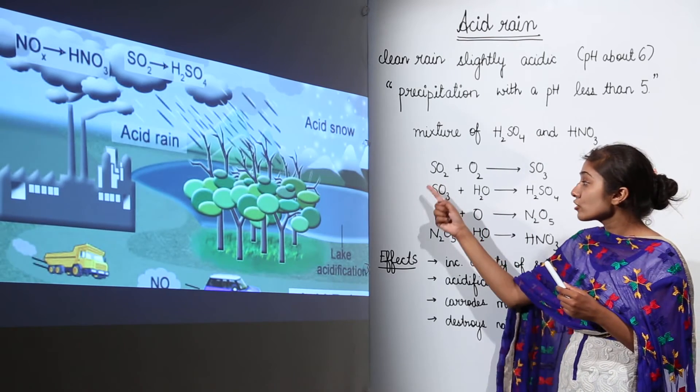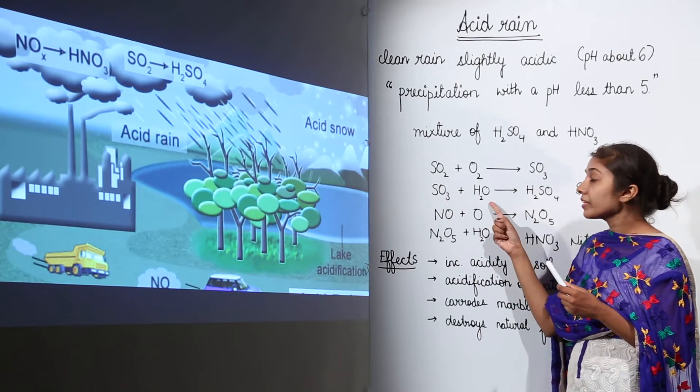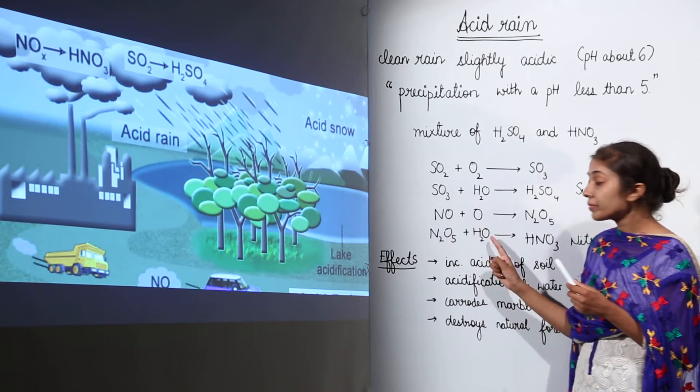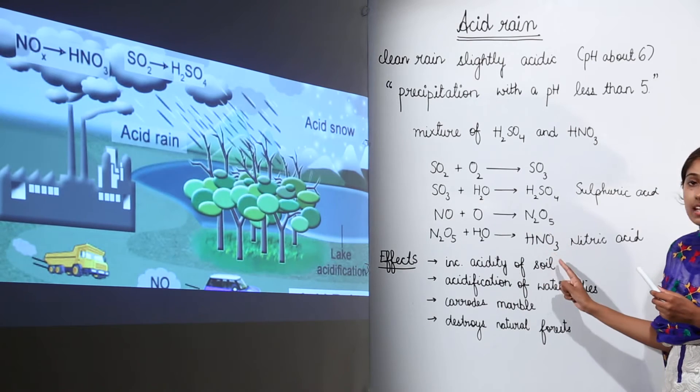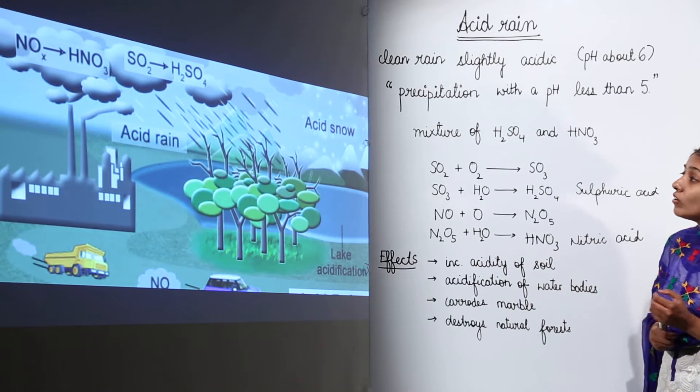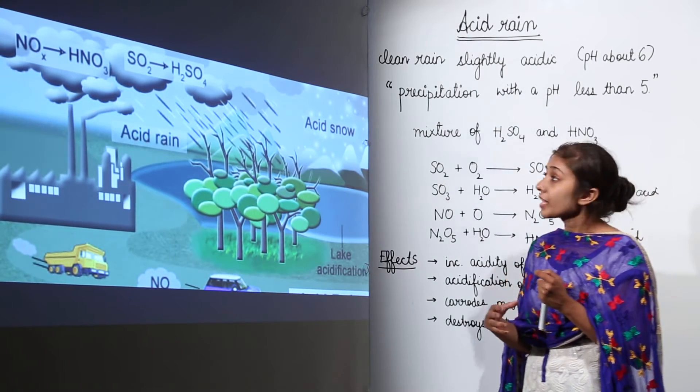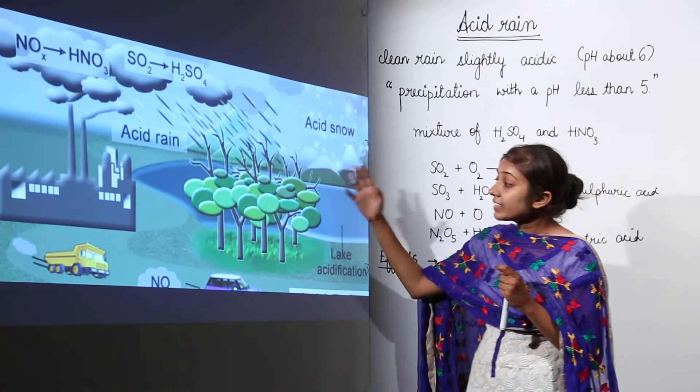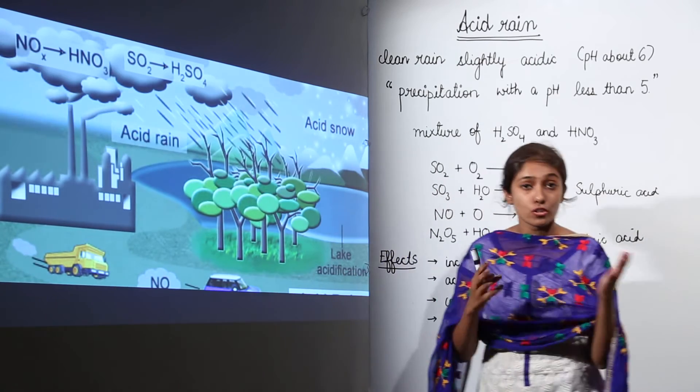We have the oxides of sulfur when it combines with water vapor in the air. Now as a whole what is happening? You see that we have these two acids when they combine with water vapor they form acid rain, and this acid rain produces a lot of effects.